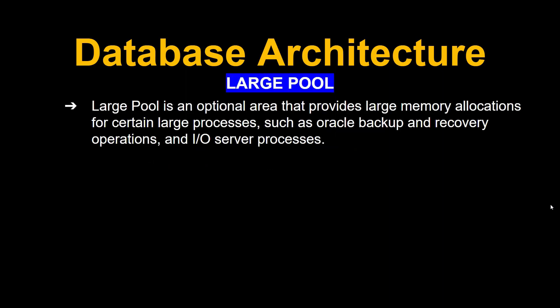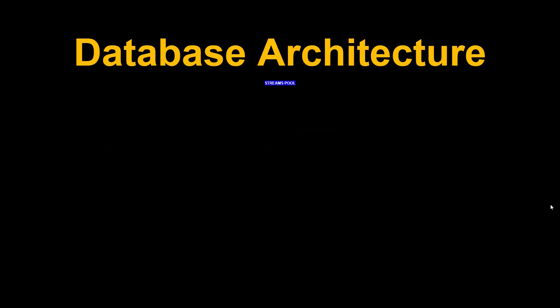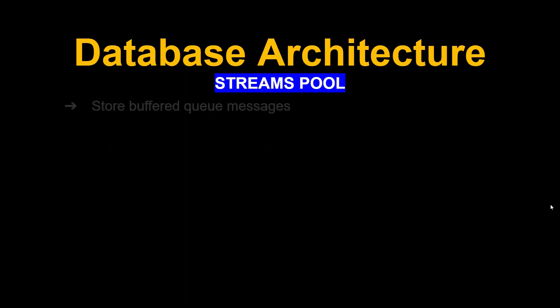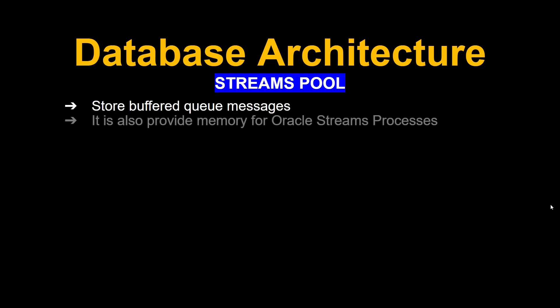Next is the Large Pool. The Large Pool is an optional area that provides large memory allocation for certain large processes such as Oracle backup and recovery operations and I/O server processes. Next is the Stream Pool. The Stream Pool stores buffer queue messages and also provides memory for Oracle Stream processes.